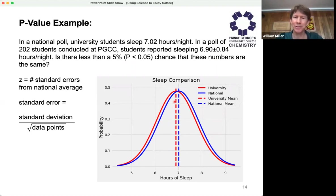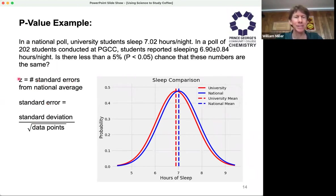If you look at these two numbers and their standard deviations plotted here, they're very close to each other. But when you have a population of 200 or a large number of students, instead of the standard deviation, you get to use something called the standard error. The Z number we're going to calculate is going to be the number of standard errors from the national average. So even though these two numbers are very close and their standard deviations overlap, there's a way to tell that they are statistically different.